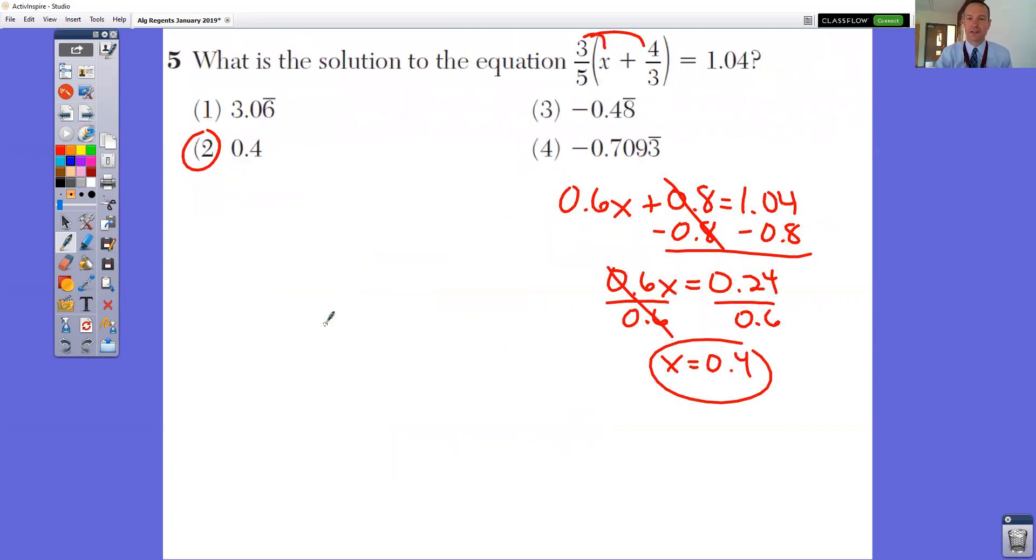In question number five, what is the solution to this equation? I would personally make these into decimals by dividing the top number divided by the bottom number and distribute. So three-fifths times x is 0.6x. Three-fifths times four-thirds is 0.8. Now you just have a two-step equation. Subtract, divide, you get 0.4.